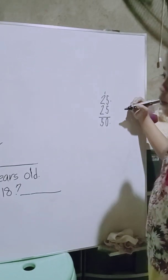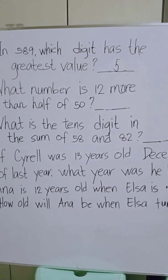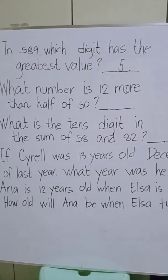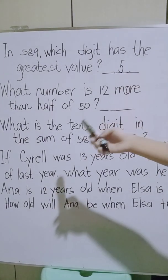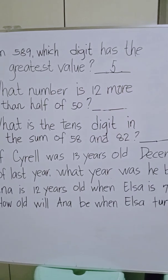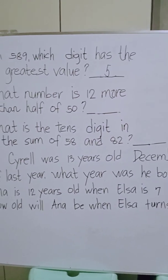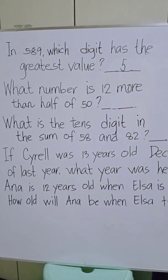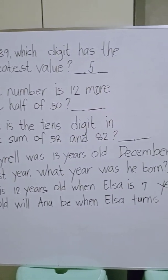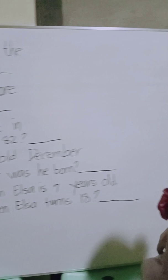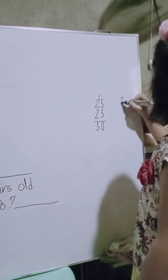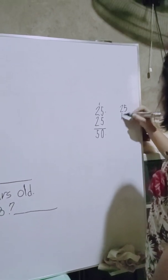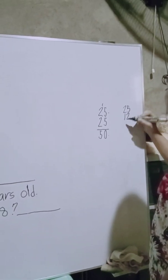Next, we are going to add 25 plus 12, because 12 more than — the meaning of more than is we are going to add 25 plus 12.